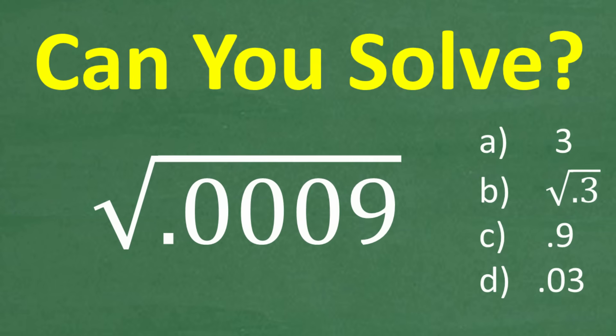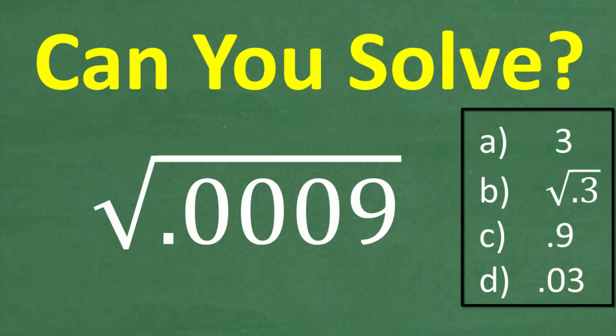We have the square root of 0.0009 and we have a multiple choice question here. A is 3, B is the square root of 0.3, C is 0.9, and D is 0.03.